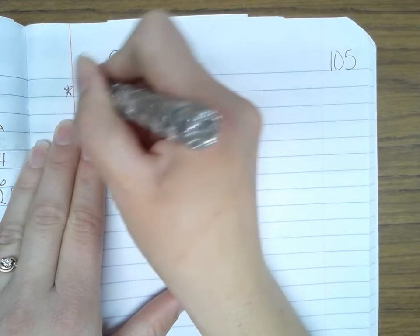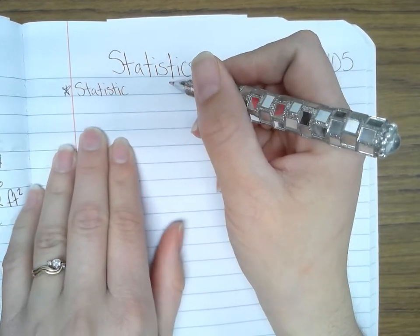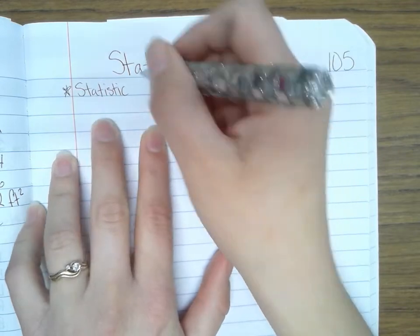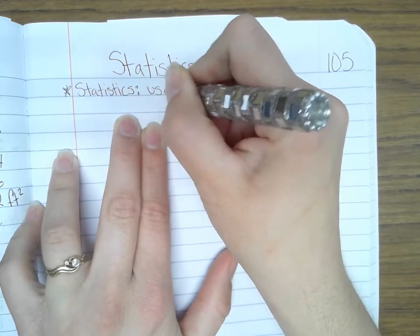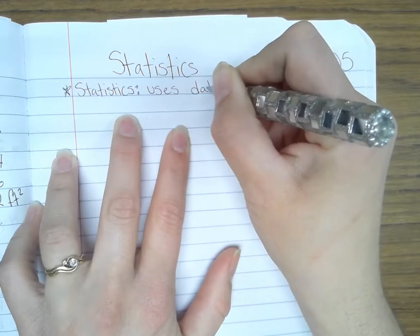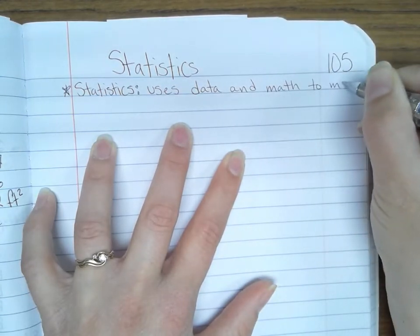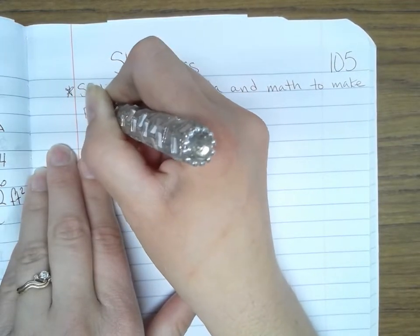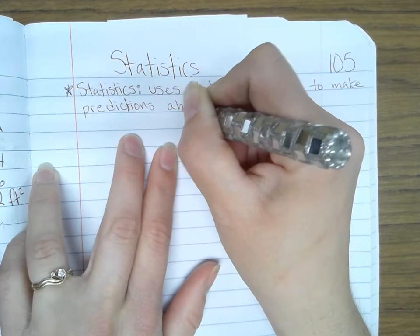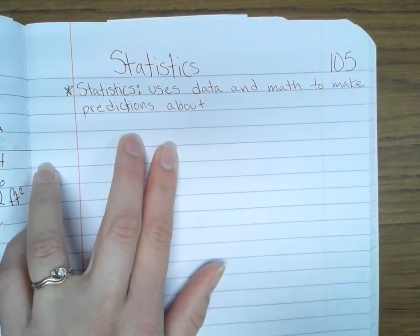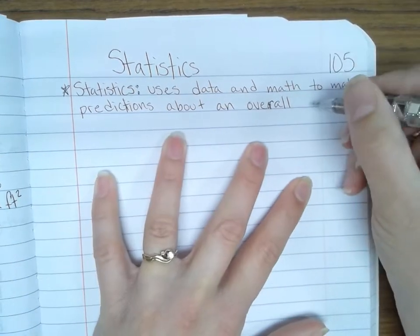Statistics is a branch of math that uses math to make predictions about a population. Statistics uses data and math to make predictions about an overall group.